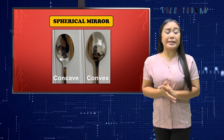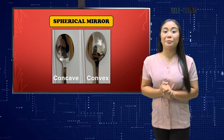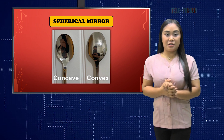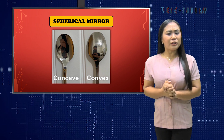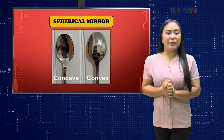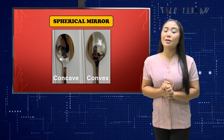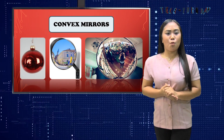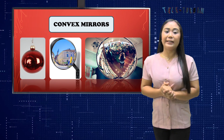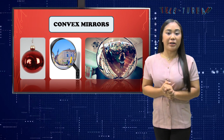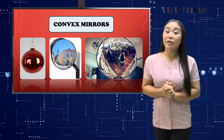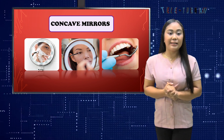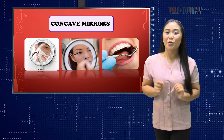A concave mirror curves inwards in the direction of the incident rays. A convex mirror bulges outward to the incident rays. The hollow part of a shiny spoon is a concave mirror, but if you turn it over, it becomes a convex mirror. A shiny Christmas ball, the rear view mirrors in cars, and the wide-angle mirrors in supermarkets designed to catch shoplifters are convex mirrors. Shaving mirrors, makeup mirrors, and dentist mirrors are concave mirrors.